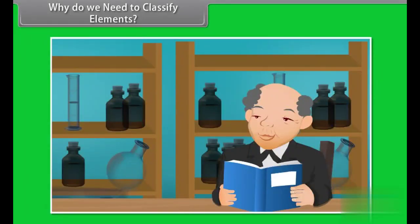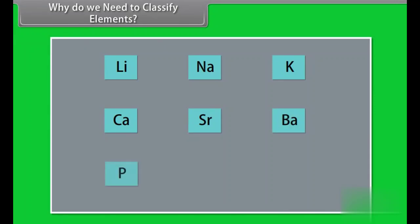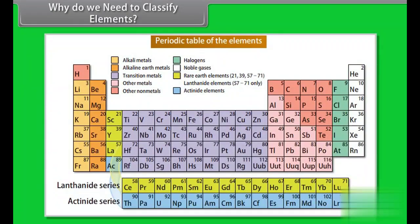Why do we need to classify elements? Before the beginning of the 18th century, only a few elements were known. As time passed, a large number of elements became known. Today we know 114 elements, and it becomes quite essential to classify them. The classification of elements led to the formation of the periodic table.